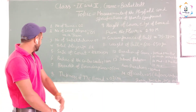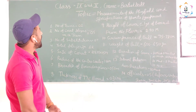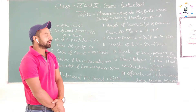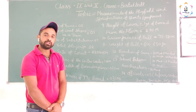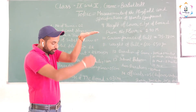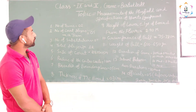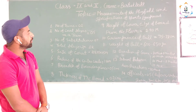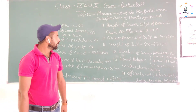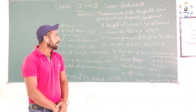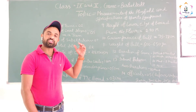What is the thickness of the board? The thickness of the board will be 3 centimeters. Next point: height of the lower edge of the board from the floor. The lower height of the board from the floor will be 2.90 meters. Height of the board is 7.5 to 7.8 centimeters. Next point: weight of the board is 600 to 650 grams.